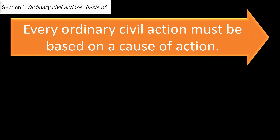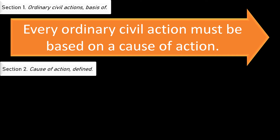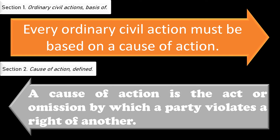Every ordinary civil action must be based on a cause of action. Take note that there are two kinds of civil action: the ordinary civil action and the special civil action. So if it is an ordinary civil action, there must always be a cause of action. Section 2 is the definition of a cause of action: a cause of action is the act or omission by which a party violates a right of another.